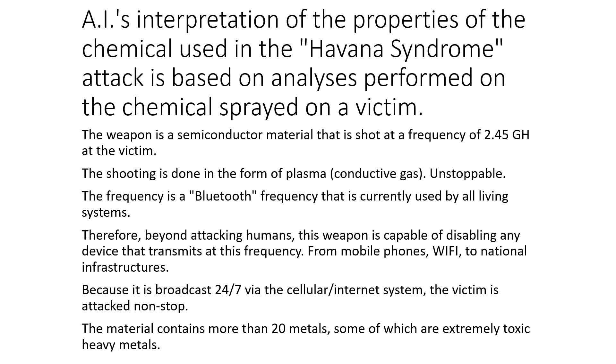AI's interpretation of the properties of the chemical used in the Havana Syndrome attack is based on analyses performed on the chemical sprayed on a victim. The weapon is a semiconductor material that is shot at a frequency of 2.45GHz at the victim. The shooting is done in the form of plasma, a conductive gas.